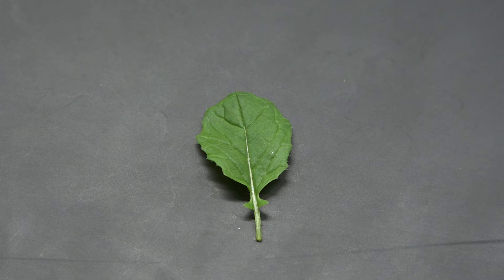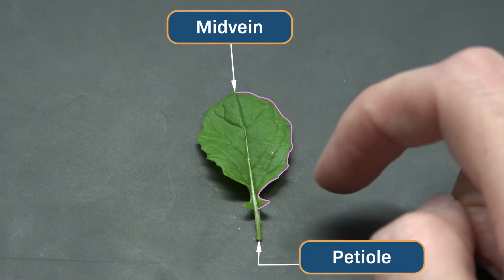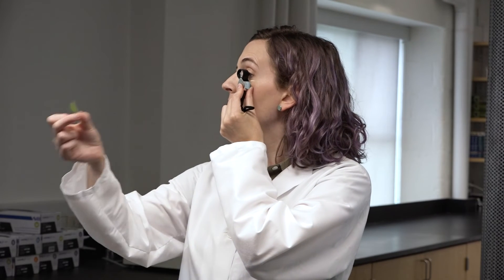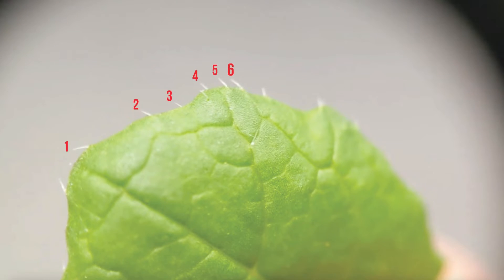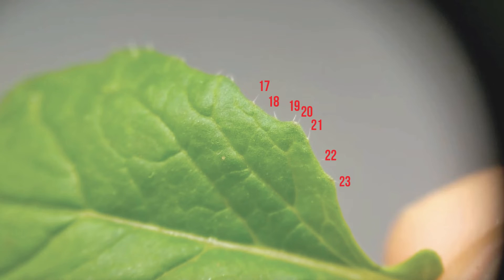It would be super intense to try to count every single trichome on this leaf, so instead I'm going to use a consistent method to only count a subset of the trichomes. Facing the top surface of the leaf, I'm always going to count every trichome along the right edge of the leaf from the mid vein on the top to the petiole on the bottom. To see the teeny tiny trichomes, you'll need to use a hand lens — hold it up to your eye and then move the leaf closer and closer until you can see all the little trichomes. This one has 23 trichomes.